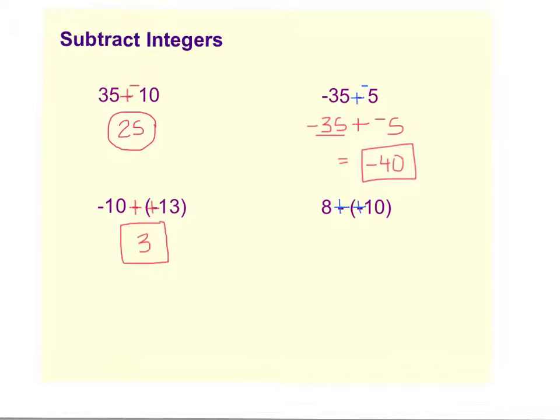Now we are adding 8 plus 10 we have two integers with the same sign so you add and keep. Add the two numbers together and keep the same sign. So that becomes a positive 18.